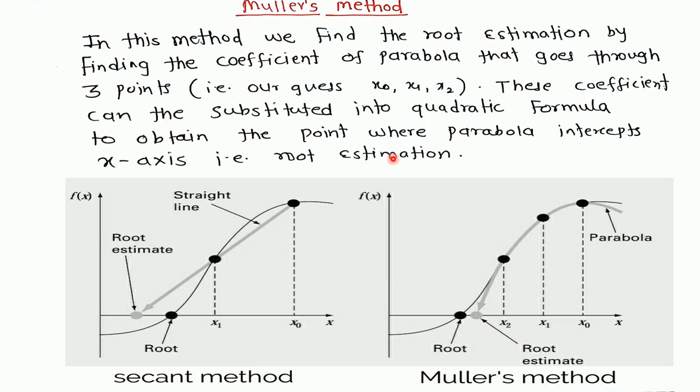In this method, we find the root estimation by finding the coefficient of the parabola that goes through three points. Three points means our initial guess is x0, x1, and x2. This coefficient can be substituted into the quadratic formula to obtain the point where the parabola intersects x-axis, that is the root estimation.